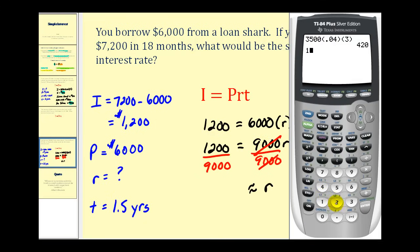So we have 1,200 divided by 9,000. Now this is our interest rate expressed as a decimal. So to convert a decimal to a percentage, remember we can multiply by 100. So the interest rate is actually 13.3 repeating or 13 and one third percent.